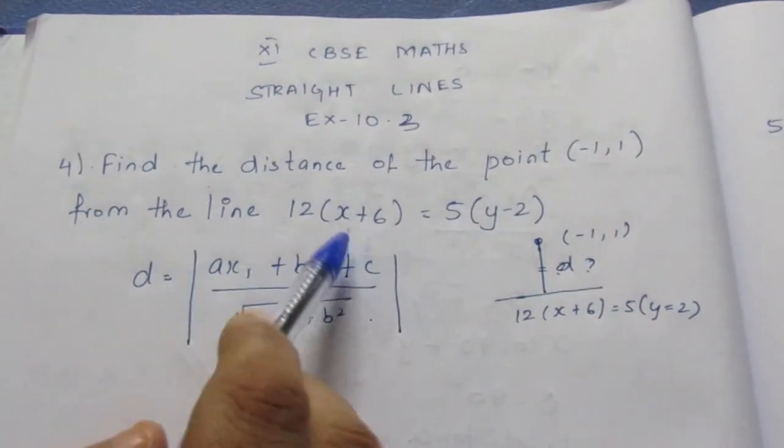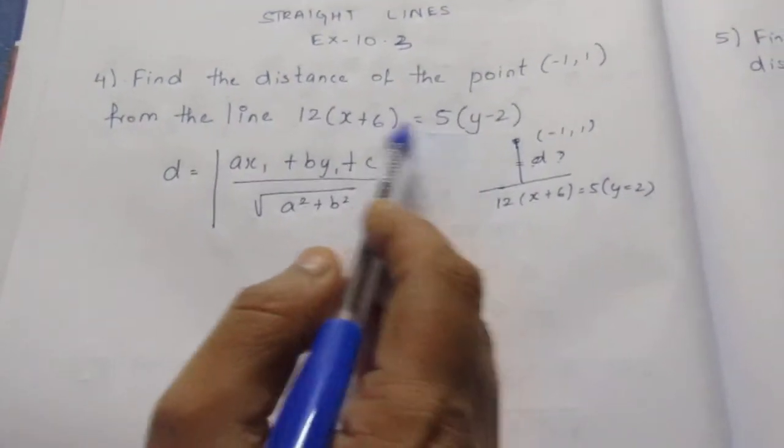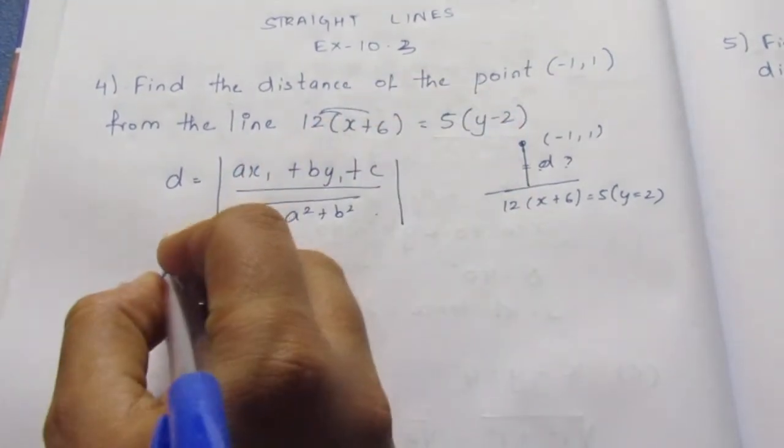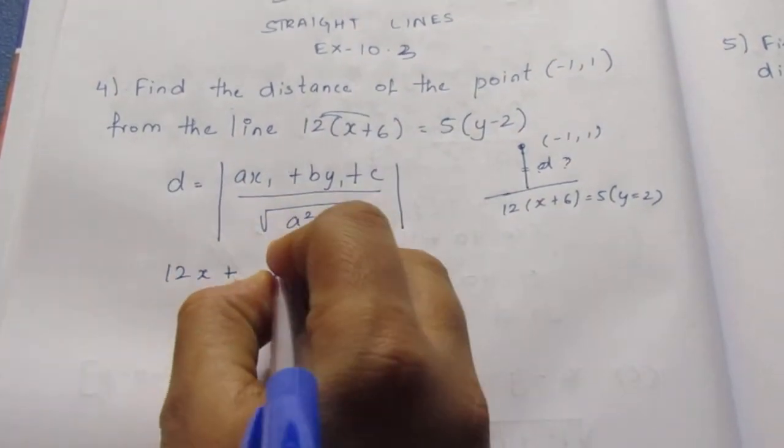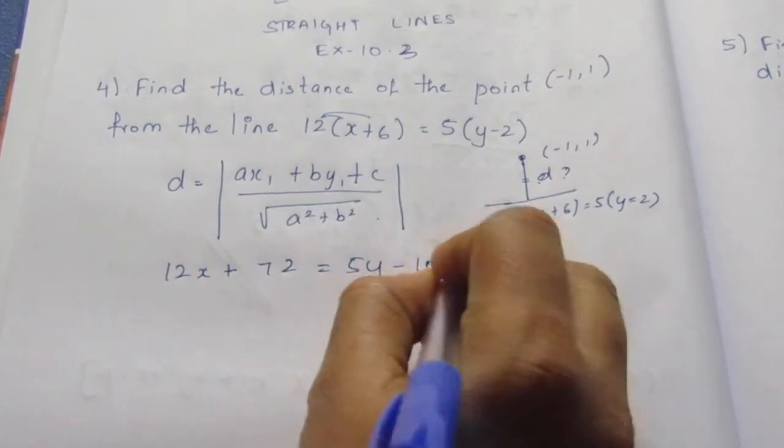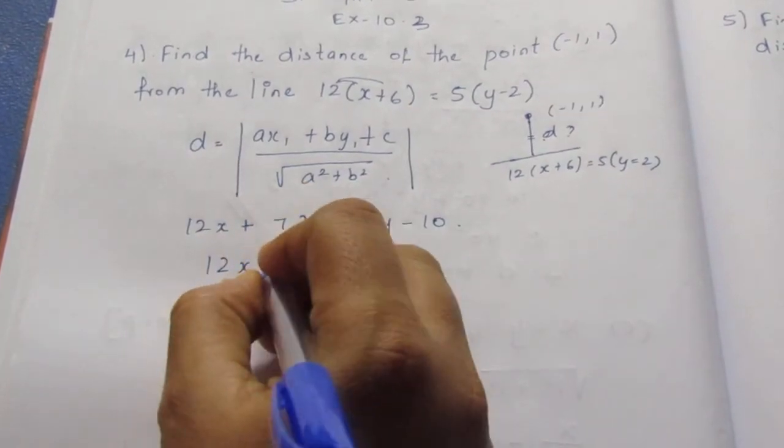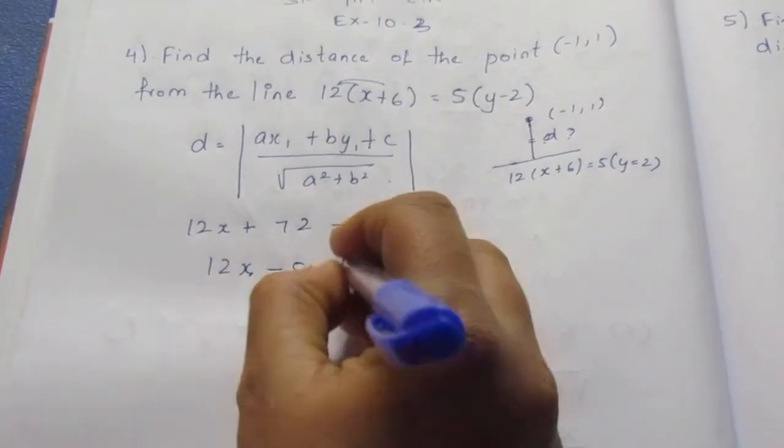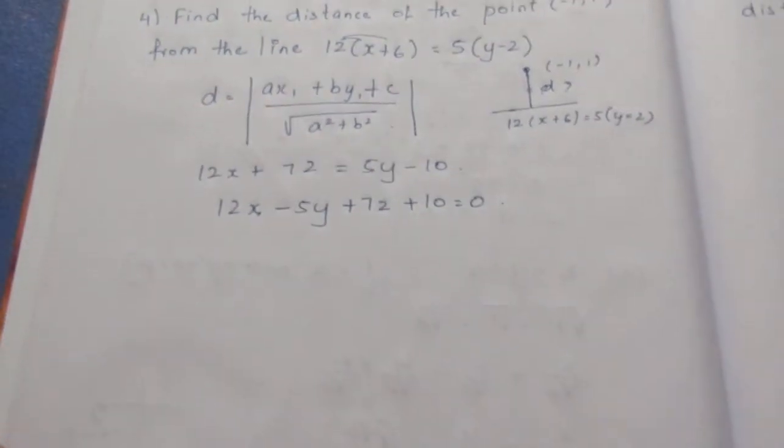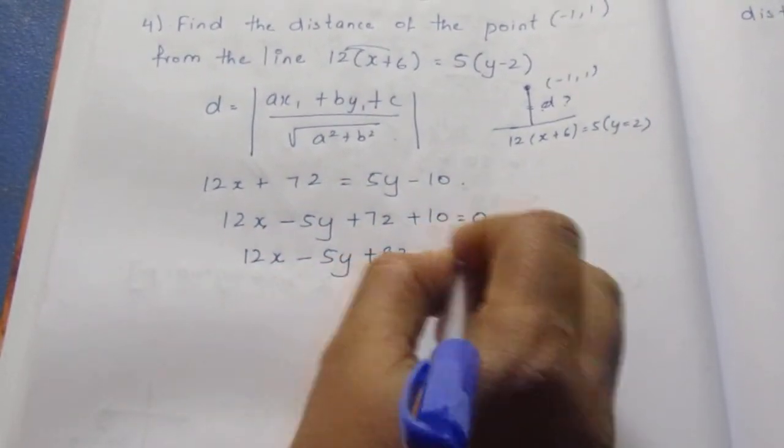Here for this we need an equation but this equation is unsolved. So we need to solve it. We need to form it to a general equation. If we multiply this inside, it becomes 12x plus equal to 5y minus 10. Now bring everything to one side. So 12x minus 5y plus 72 plus 10 equal to 0. Now this becomes 12x minus 5y plus 82 equal to 0.